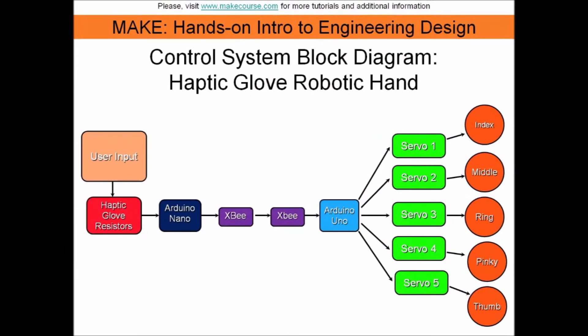Here is the block diagram of the control system. The user wearing the glove changes the resistance of the flex sensor with hand gestures.